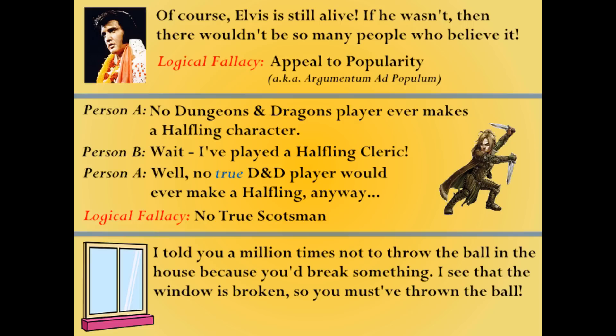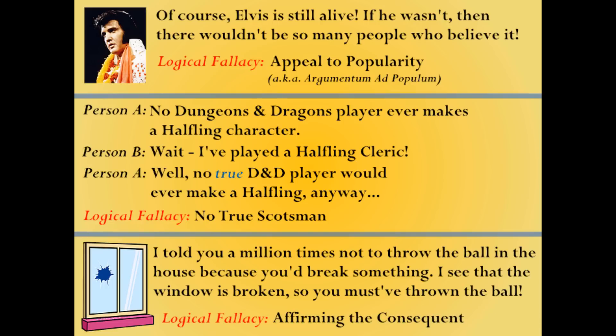Finally: "I told you a million times not to throw the ball in the house because you'll break something. I see that the window has been broken, so you must have thrown the ball." This is what's known as the affirming the consequent fallacy. Just because the window is broken doesn't necessarily mean a ball was thrown to break that window. This fallacy is easiest to spot when analyzing the structure of an argument — it works off a classic if-then statement, in which the 'then' part is affirmed to conclude that the 'if' part, the condition, occurred. This is fallacious.